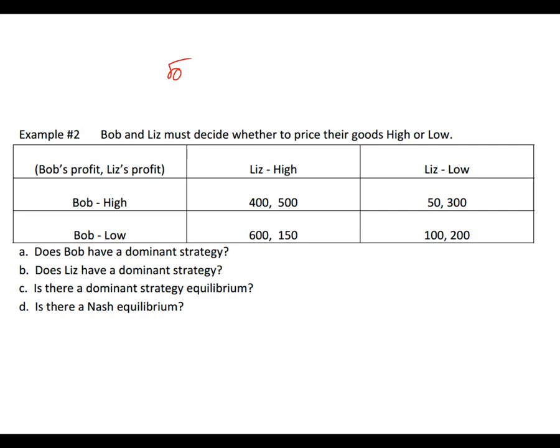Let's say Liz prices high. Bob's two choices are to price high or price low, and he could make $400 or $600. He's going to choose $600 — $600 is more. So if Liz prices high, he's going to price low. Then if Liz goes low, he is also going to go low. So for Bob, he does have a dominant strategy: to price low.